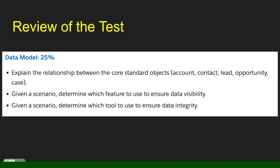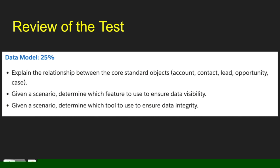Quick review of this particular section: the data model makes up 25% of the test, so this is the core of the test. The core of your questions is going to be all about the data model. You need to explain the relationship between the core standard objects — account, contact, lead, opportunity, and case. You also need to determine which feature to use to ensure data visibility, and given a scenario, determine which tool can ensure data integrity.